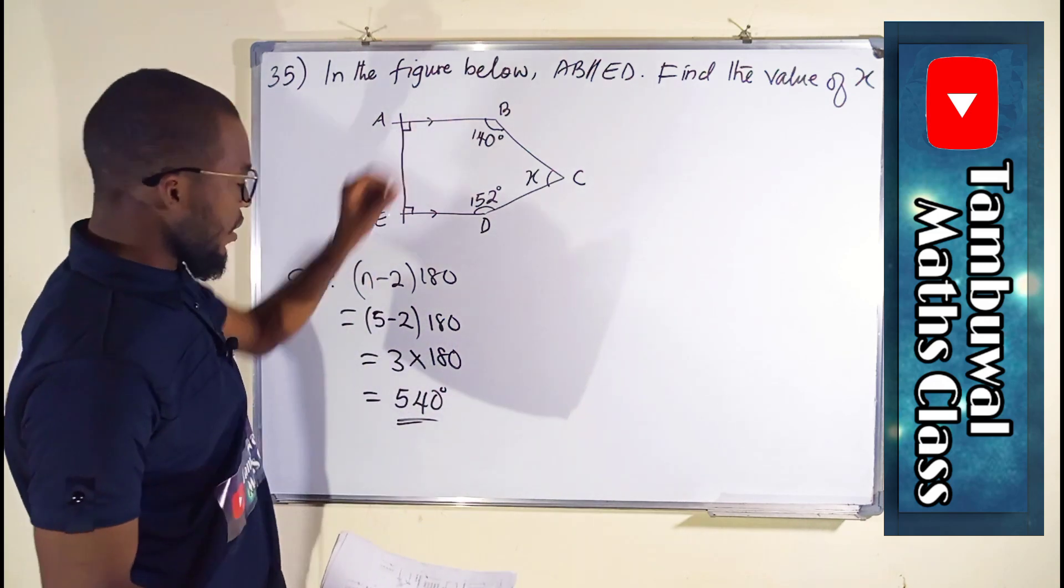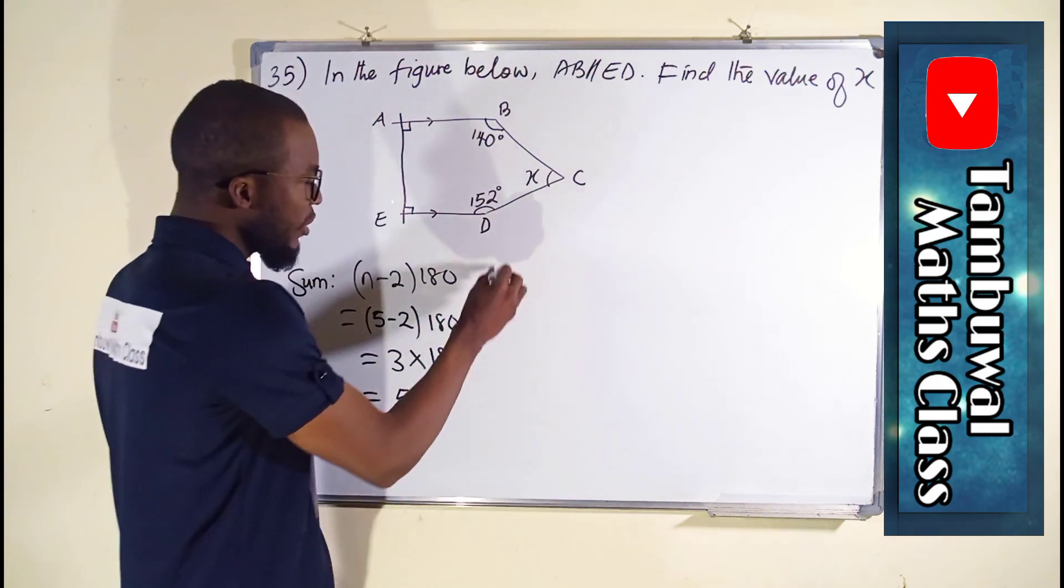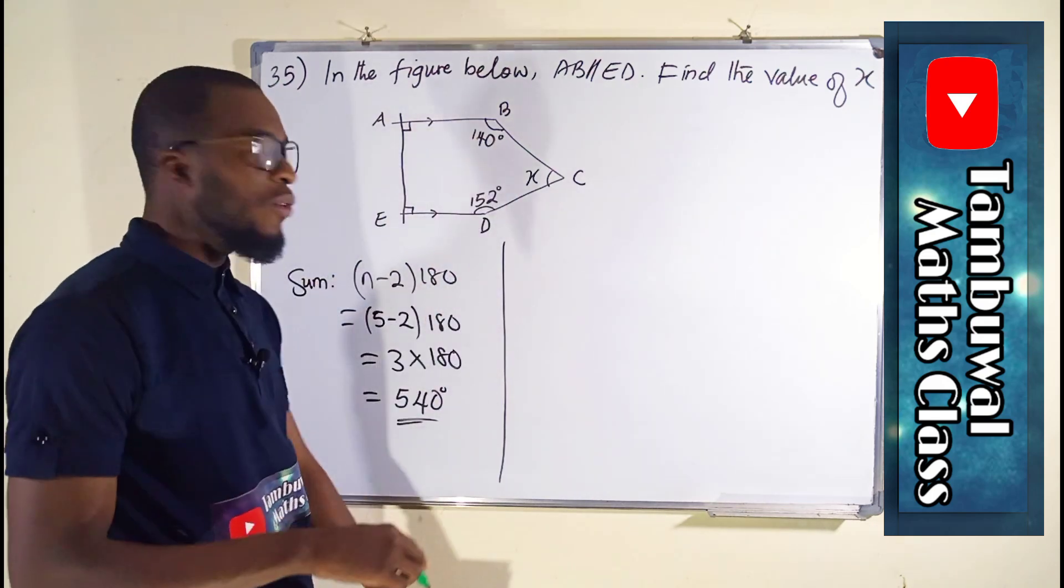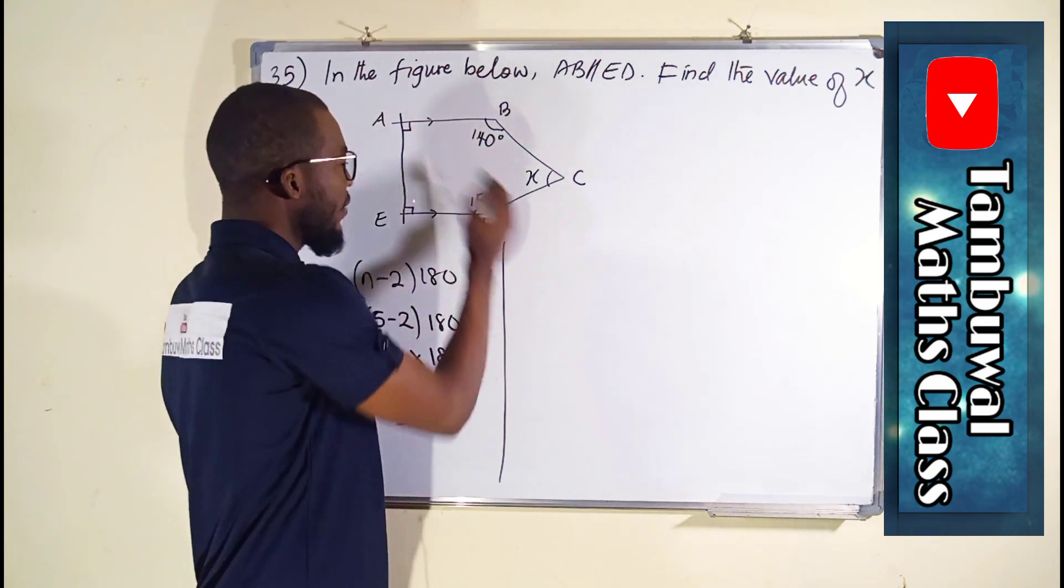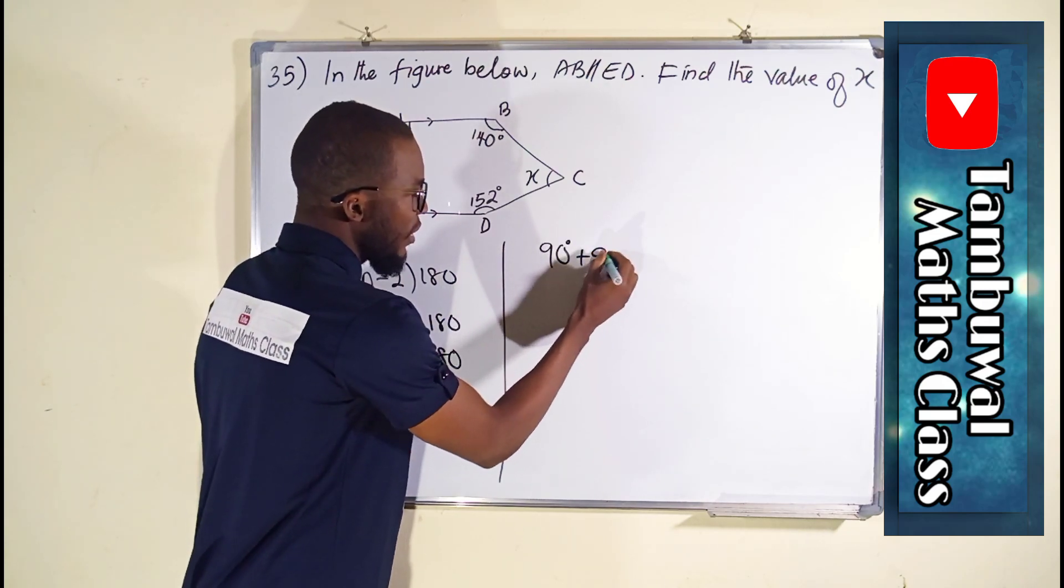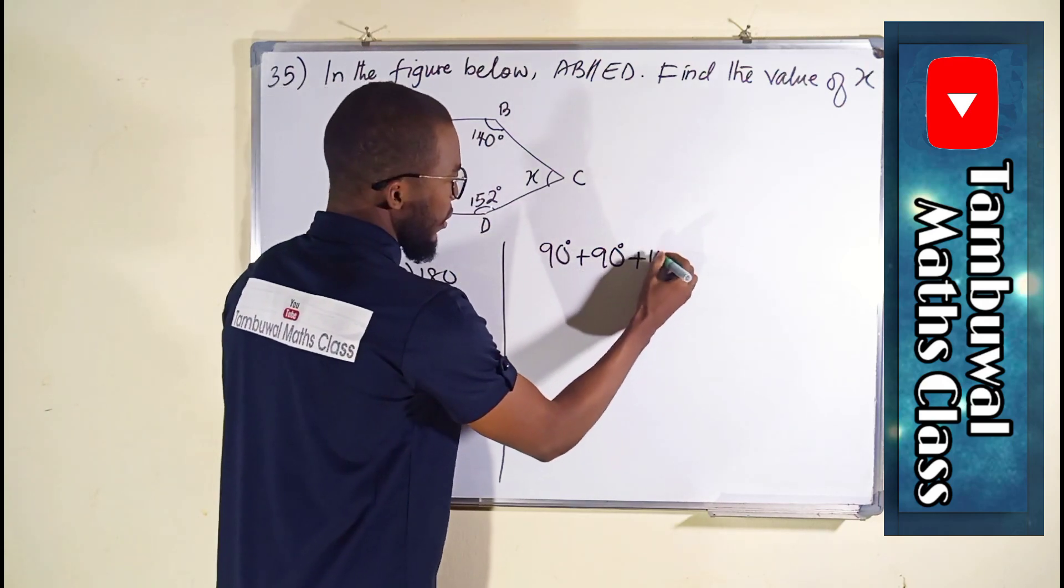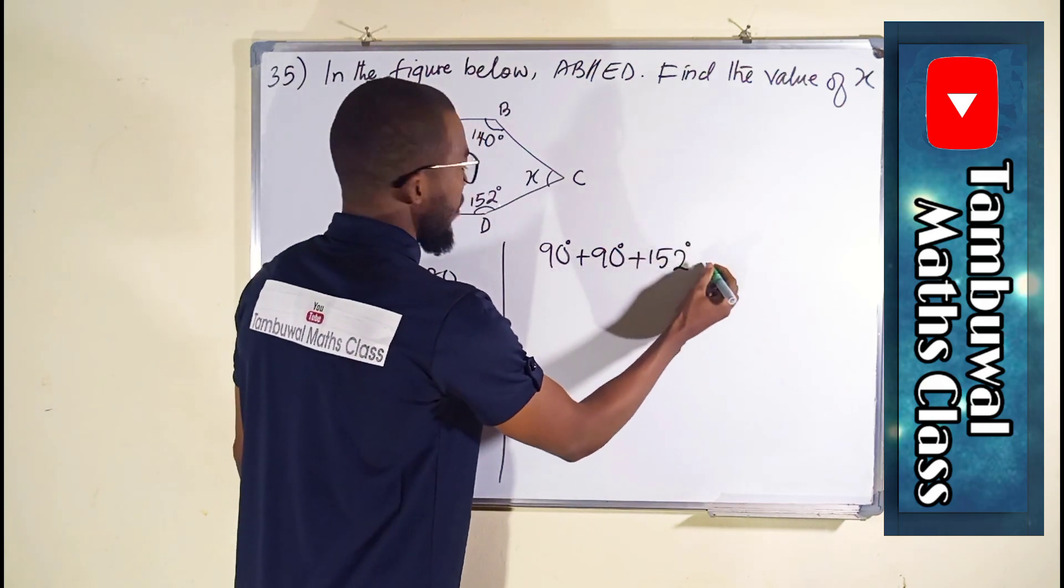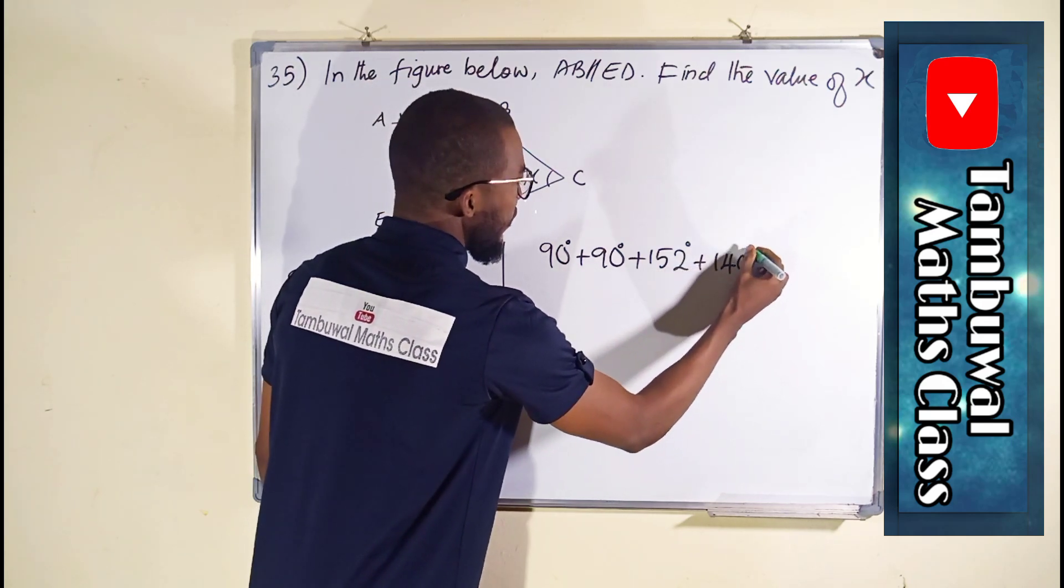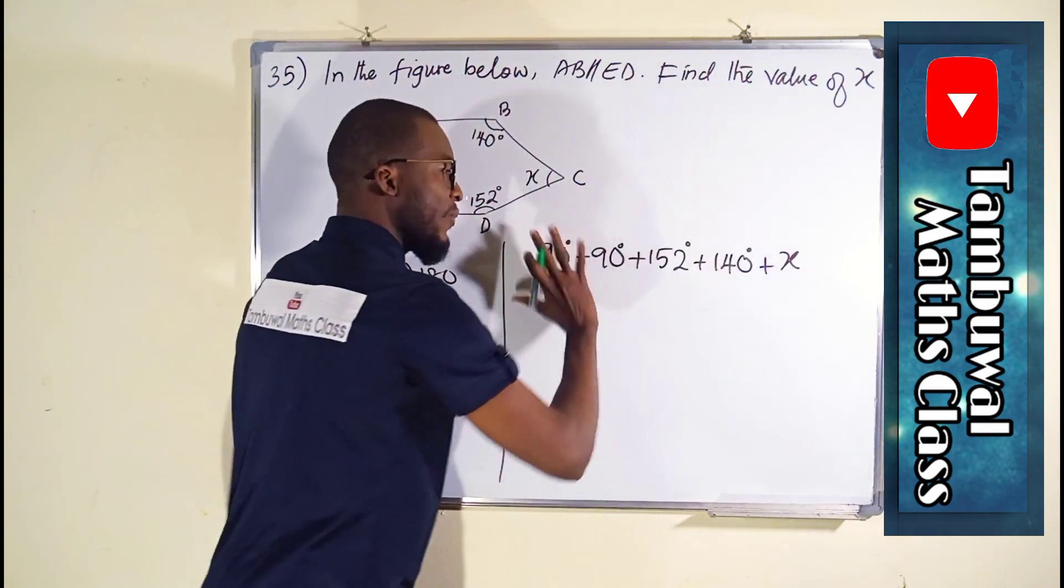The total angles here is equal to 540. So now it means that if we add all of them together, we are going to obtain this 540. We have here 90 degrees, we have another 90 degrees, we have 152 degrees, we have 140 degrees, and we have X.